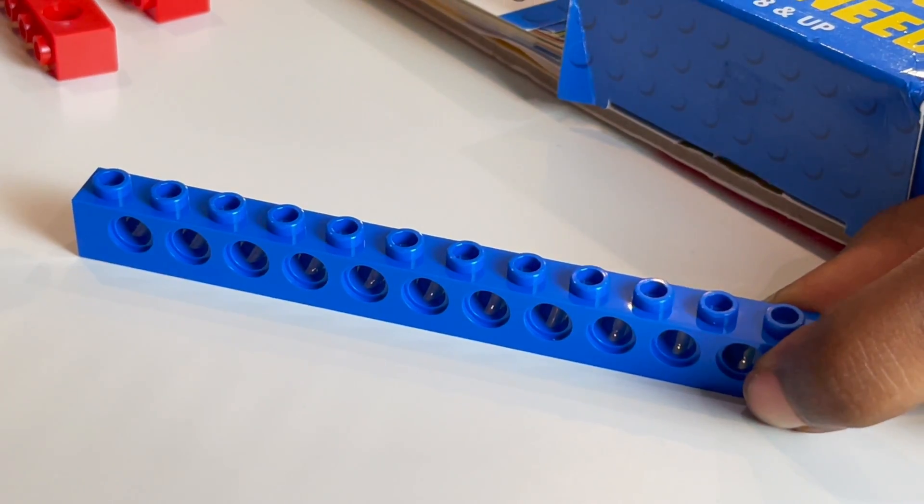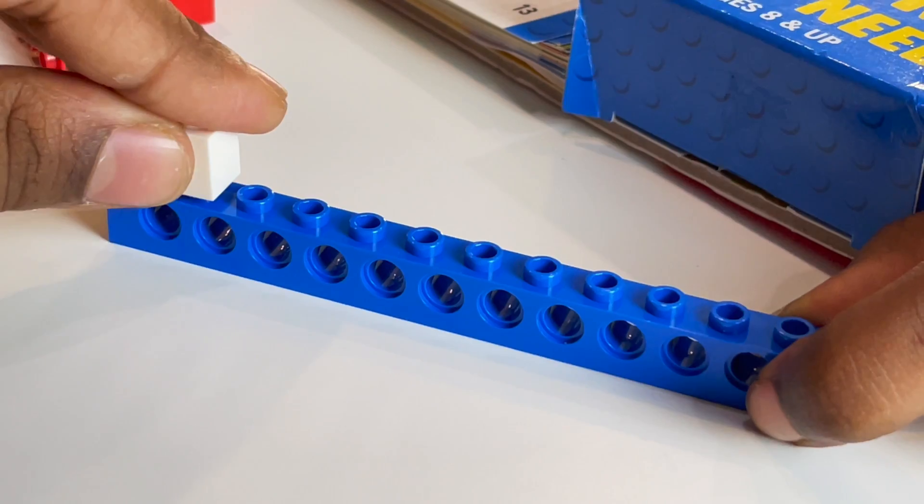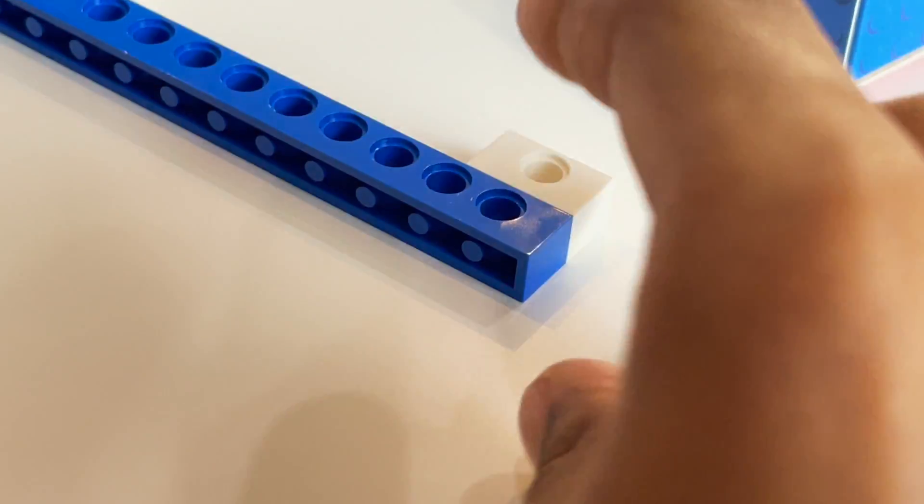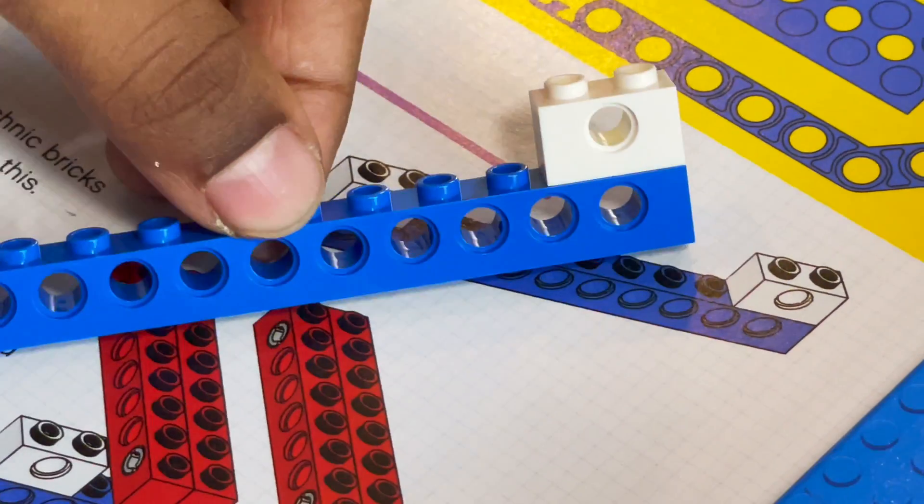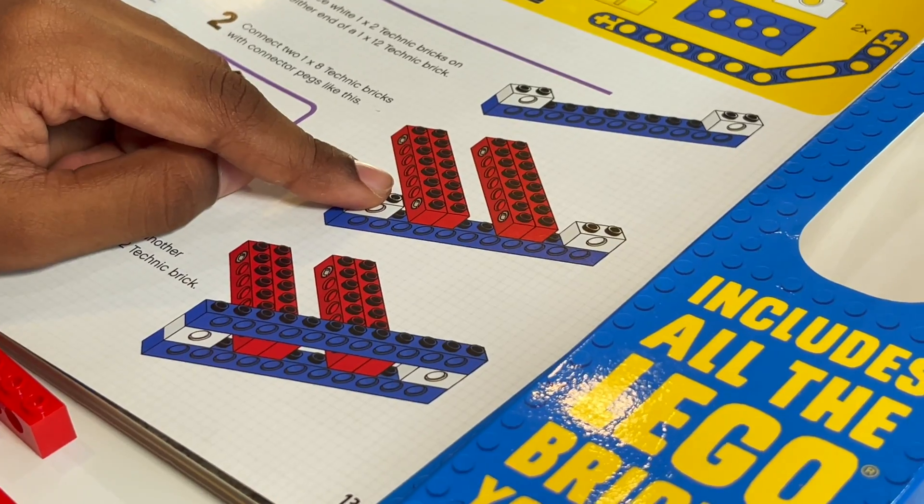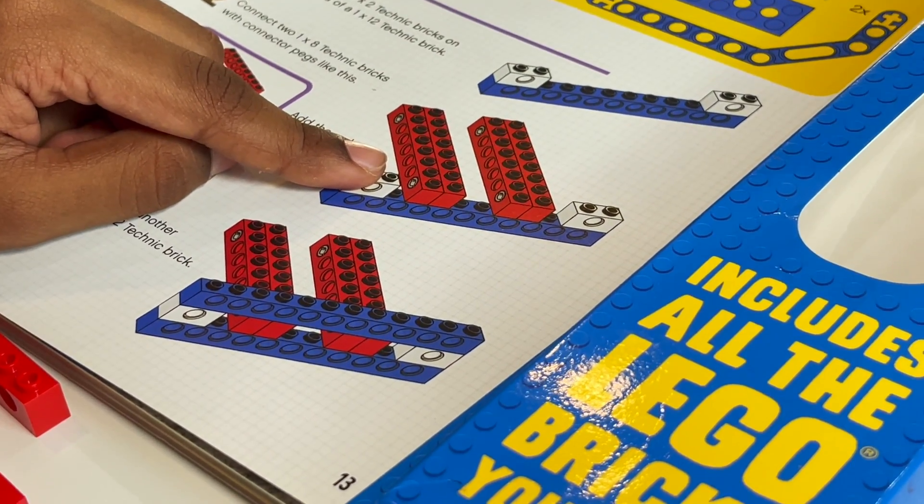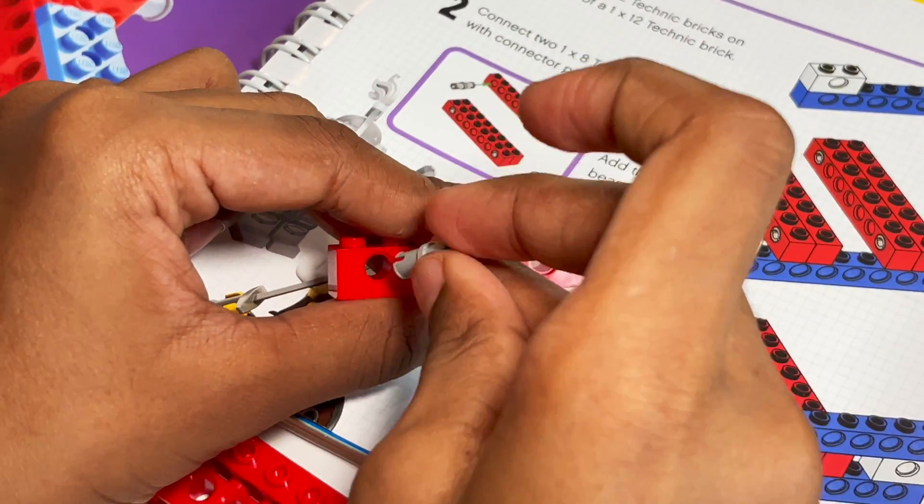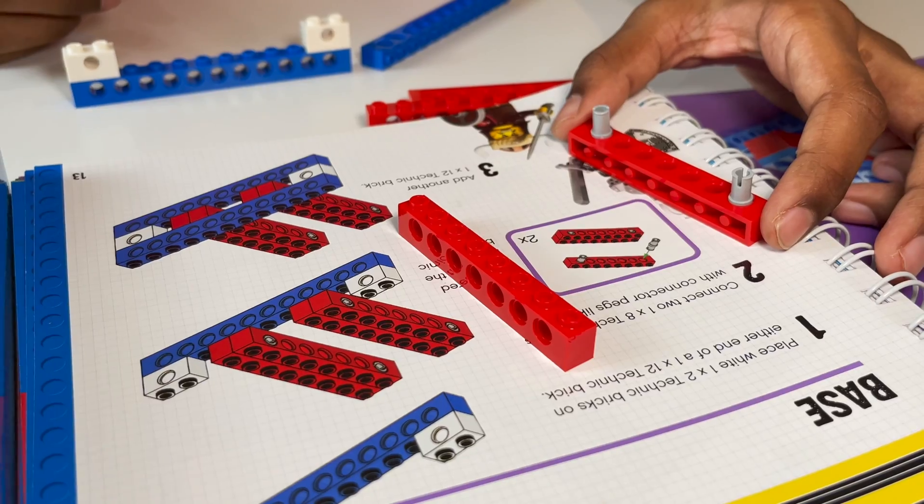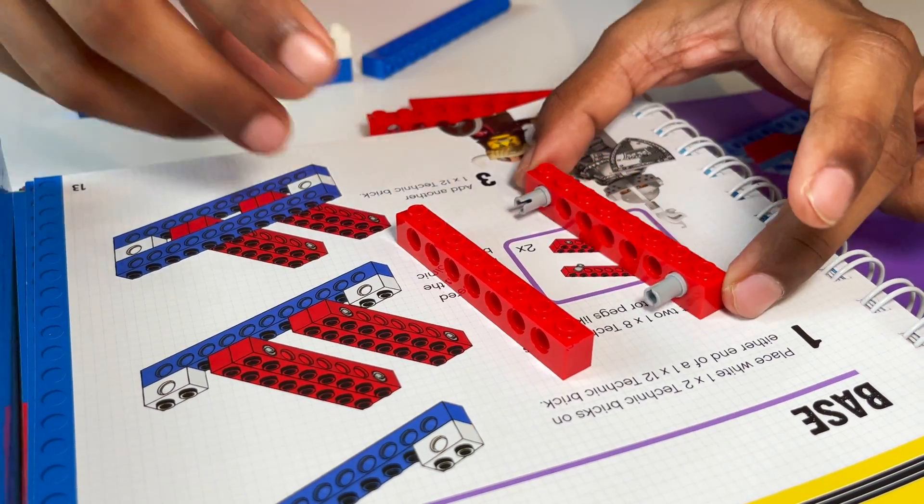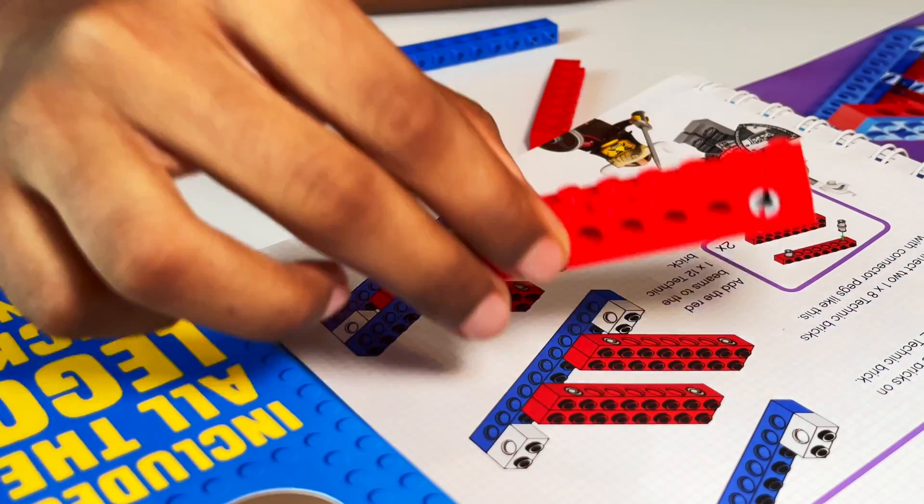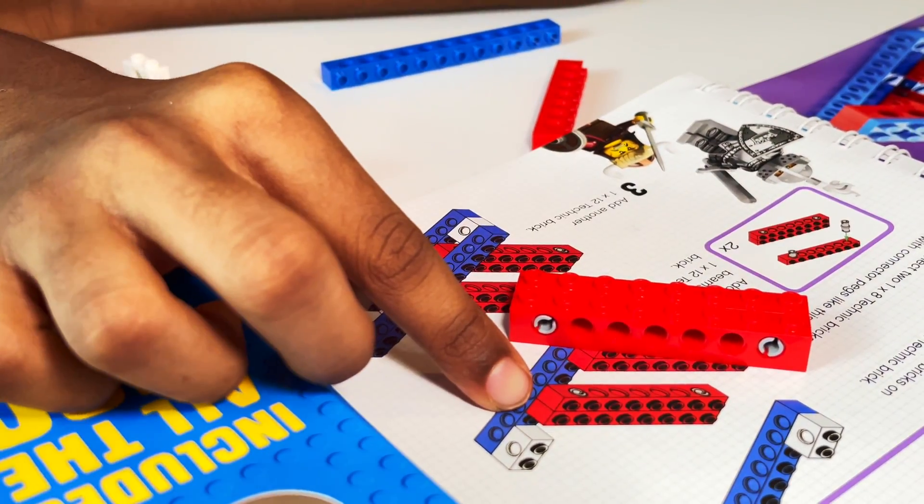I'm placing the white bricks on the blue bricks, like this. Now let's build the beams. Insert the pegs. Now let's connect the bricks. That's one. We need to build another one.